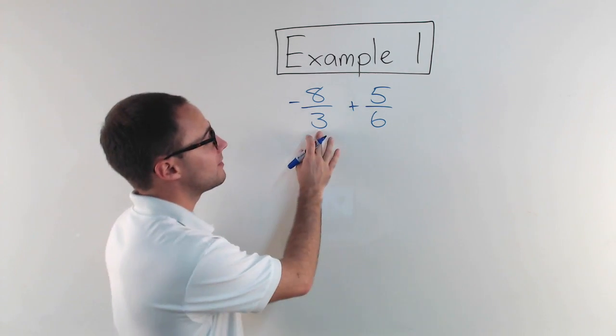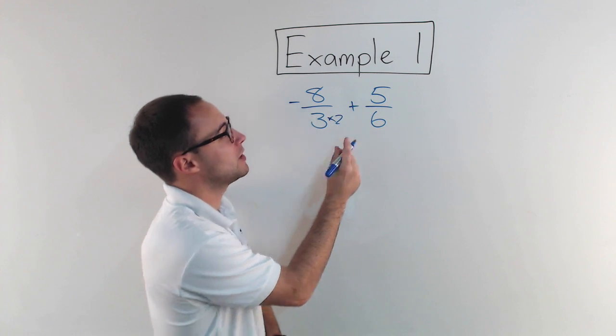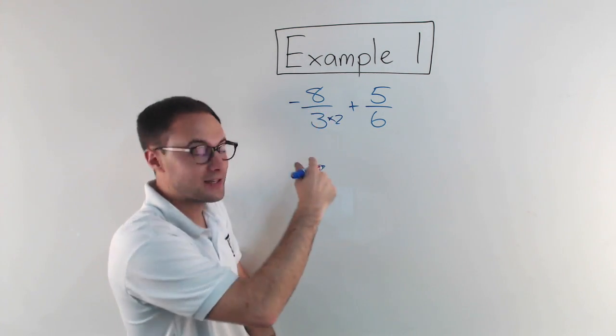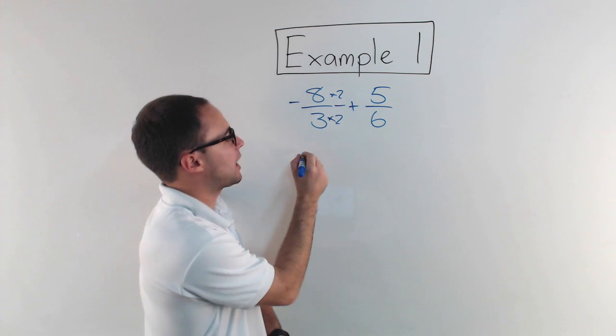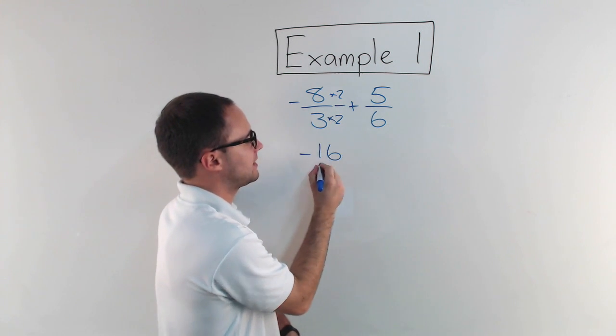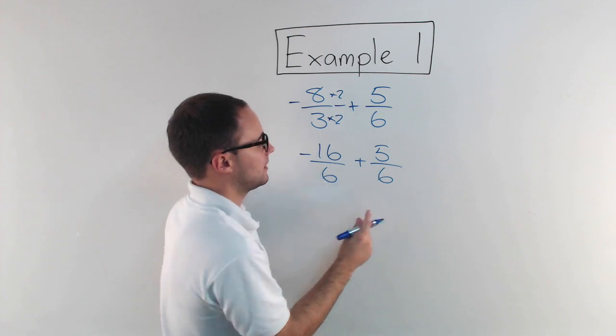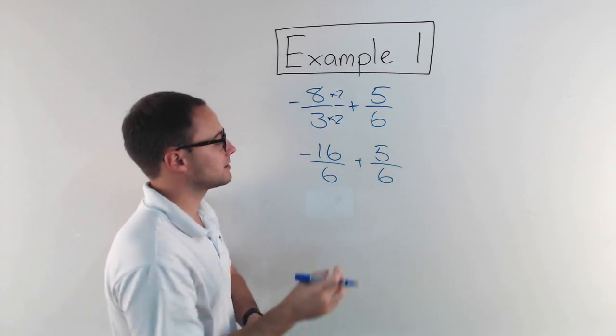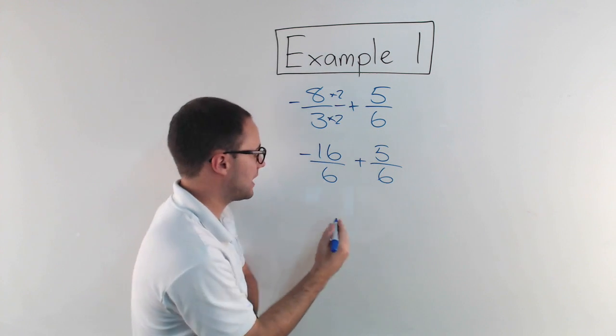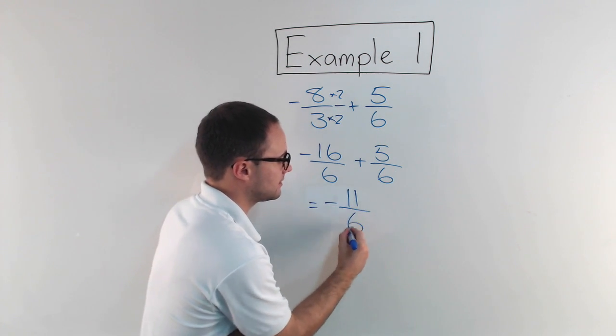Five-sixths is great. That needs to change to a six, so I'm going to just get a times two. Anything I do to the denominator, I have to also do to the numerator. So this now becomes negative sixteen over six plus five-sixths. Now we have common denominators, so now I can just add my numerators. Negative sixteen plus five becomes negative eleven-sixths.